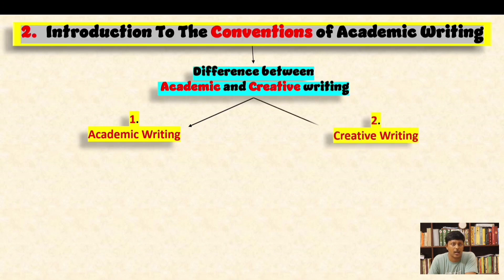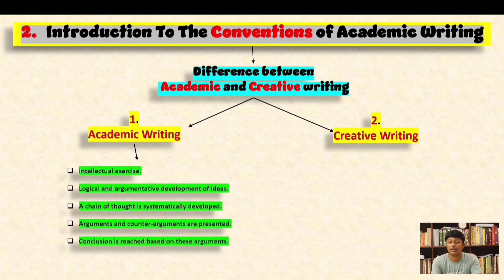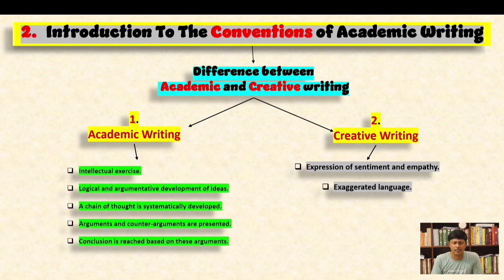On one hand you have academic writing, and on the other hand you have creative writing. Academic writing is an intellectual exercise involving logical and argumentative development of ideas; a chain of thought is systematically developed, arguments and counter-arguments are presented, and a conclusion is reached. Creative writing, on the other hand, deals with the expression of sentiment, empathy, and exaggerated language. So there are marked differences between academic writing and creative writing.